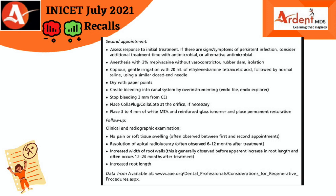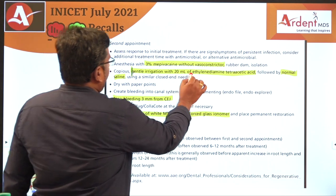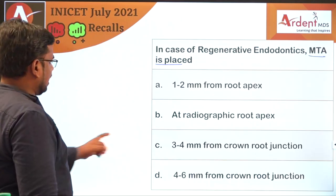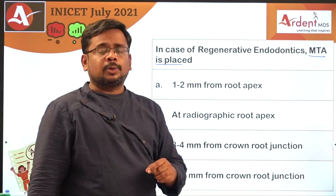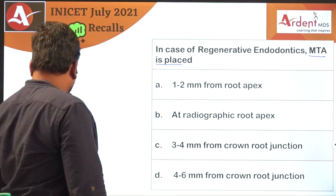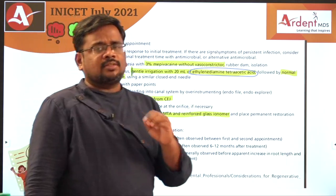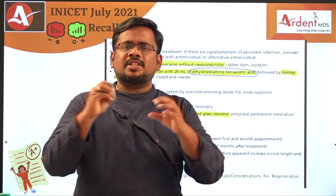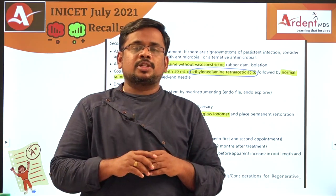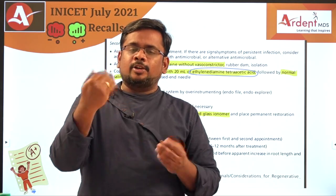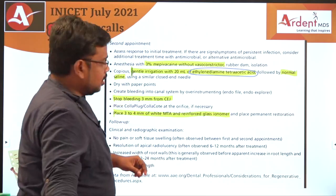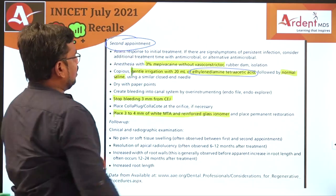In the second appointment, remember you should not use sodium hypochlorite. Instead, use EDTA — ethylene diamine tetra acetic acid. EDTA acts as a chelating agent which opens the dentinal tubules. The growth factors present inside the dentinal tubules come out and help the regenerative procedure. That is why EDTA is used in the second appointment. Next time they may ask about the irrigant solution used.